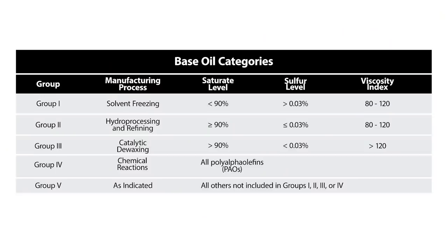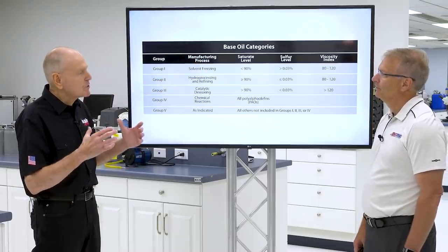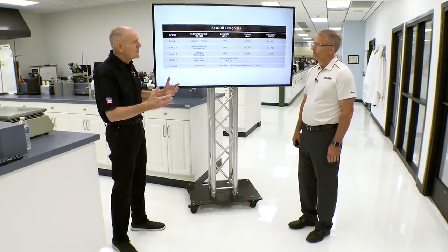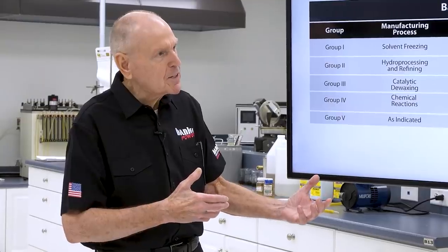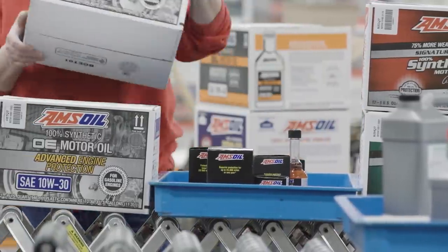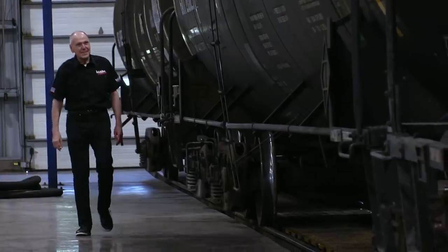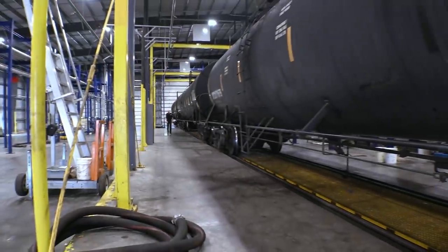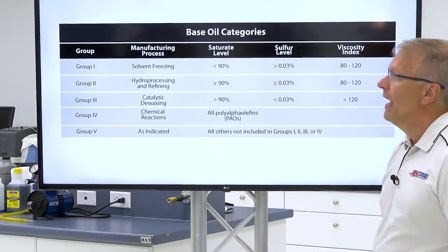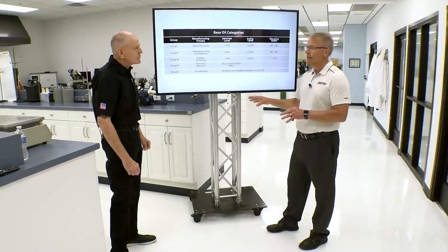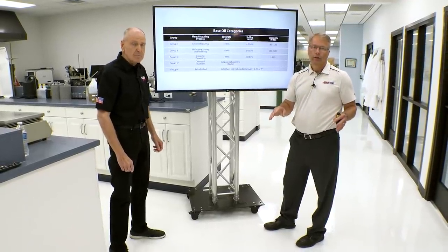The next thing we're going to talk about — what's the difference between a synthetic and a conventional product? This is what a lot of viewers ask about. It starts with base oil: this is what you start with, and then you do the additive blend to do the specified job. We actually saw a lot of these base oils in tankers out on the tour. This is a list of base oil categories — the start of defining the difference between conventional and synthetic fluids.